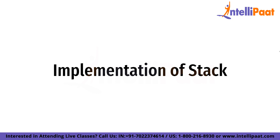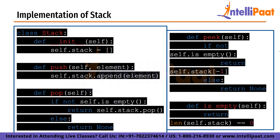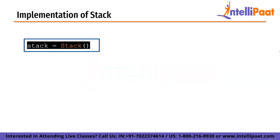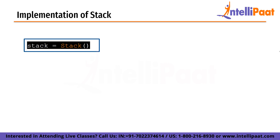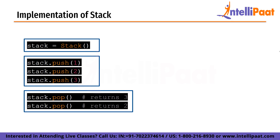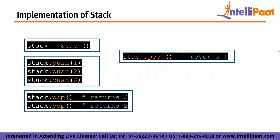In Python, stacks can be implemented using an array or a linked list. We define a stack class that uses a Python list as the underlying data structure. The push method adds an element to the top of the stack using the append method. The pop method removes the top element using the list's pop method. The peek method returns the top element without removing it, and the isEmpty method checks if the stack is empty. We create an instance of the stack class, push elements onto it, remove elements using pop, check the top element using peek, and verify emptiness with isEmpty.